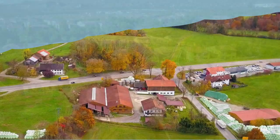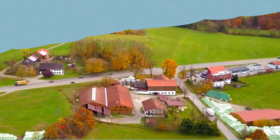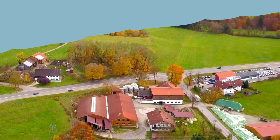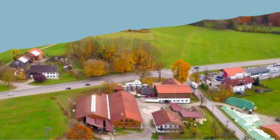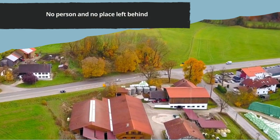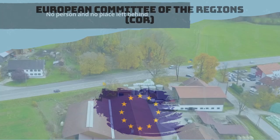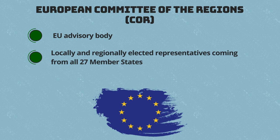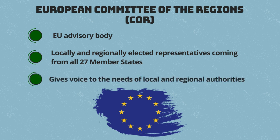The European Union, through the Green Deal, has emphasized in various ways the importance of implementing policies and initiatives at the local level. One of the main objectives of the EU Green Deal is no person and no place left behind. This is also done through the European Committee of the Regions, an EU advisory body composed of locally and regionally elected representatives from all 27 member states, giving voice to the needs of local and regional authorities.